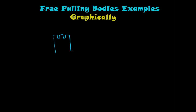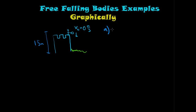For the first example, there's a guy on top of a castle dropping a stone. When I say drop, I mean the initial velocity of the stone is zero meters per second. He drops the stone from a height of 15 meters. Our questions are: (a) how long does it take for the stone to reach the ground, and (b) what is the final velocity?